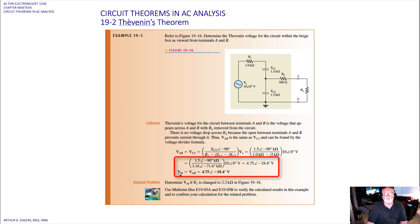So the Thevenin voltage V_Thevenin is equal to the voltage at that port V_AB, gives us 4.75∠-18.4° volts for our Thevenin.